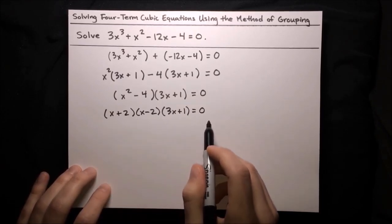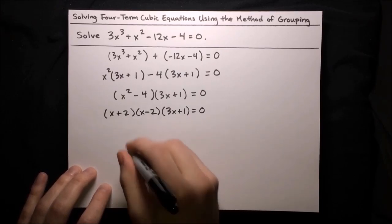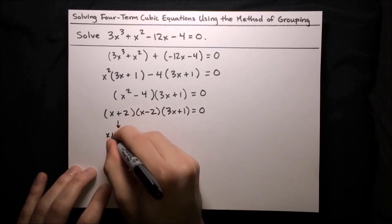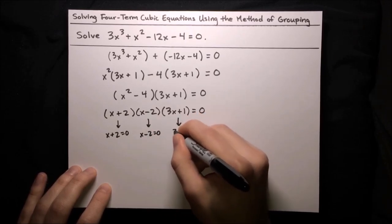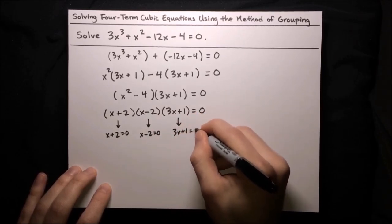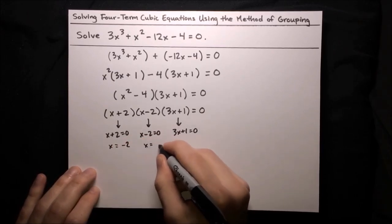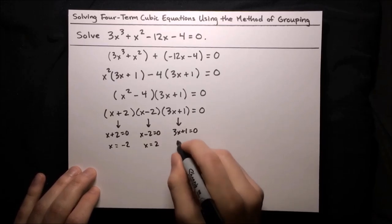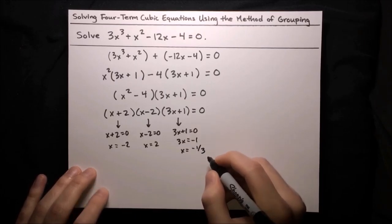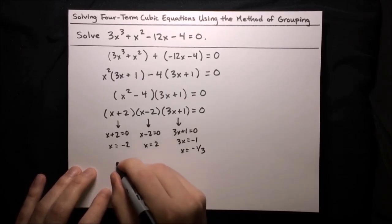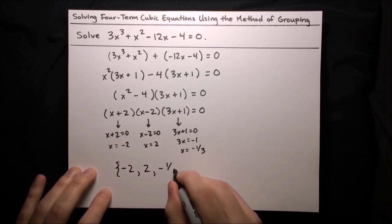This is all nicely factored. Using the zero product property, we set each factor equal to 0: x plus 2 equals 0, or x minus 2 equals 0, or 3x plus 1 equals 0. Solving each: x equals negative 2, or x equals 2, or 3x equals negative 1, which means x equals negative 1 third. So our solution set is negative 2, 2, and negative 1 third.